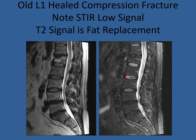We can compare that to an old fracture. On T2, water is white and fat is white, and you can see the signal change in the fracture but aren't sure if it's fresh. Going to the STIR image, you'll see there's no water within the vertebral body — so this is a nicely healed fracture of L1.